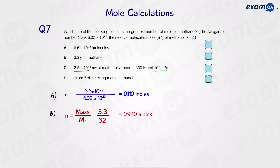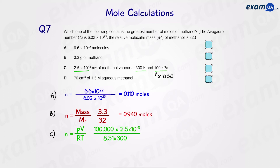For part C, we've been given the volume, temperature, and pressure of methanol vapour, so we use the ideal gas equation PV = nRT. Rearranging for moles: n equals PV over RT. Convert kilopascals to pascals by timesing by 1000. Pressure is 100,000 pascals, volume is 2.5 times 10 to the power of minus 3 metres cubed, R is 8.31, and temperature is 300 Kelvin. This gives us 0.1 moles.